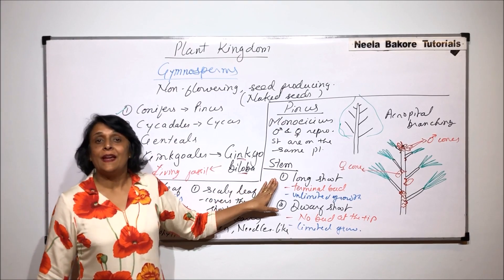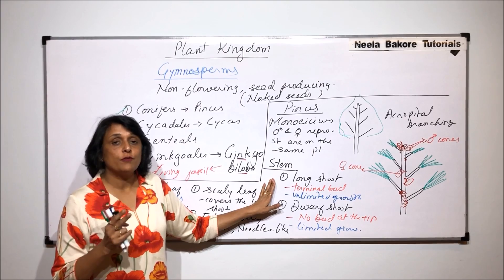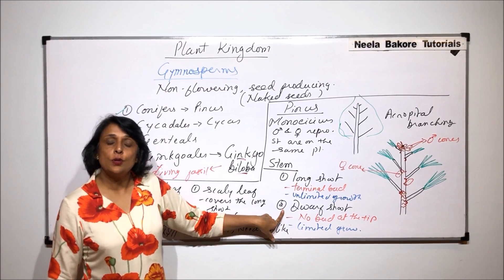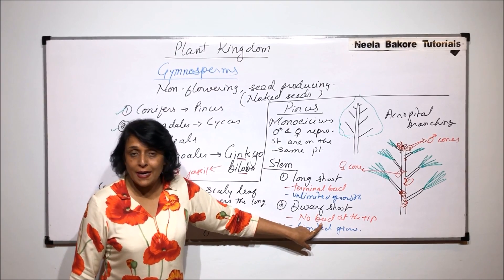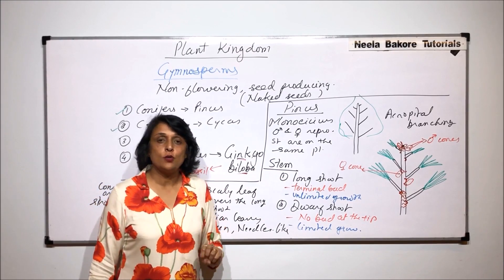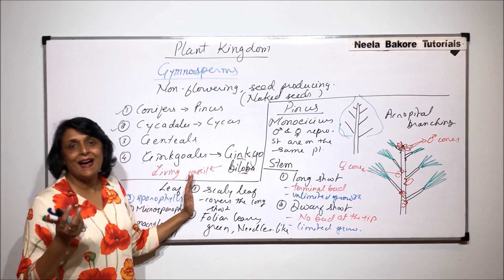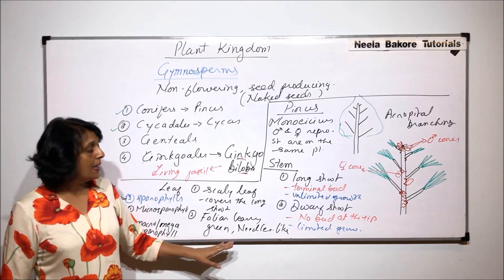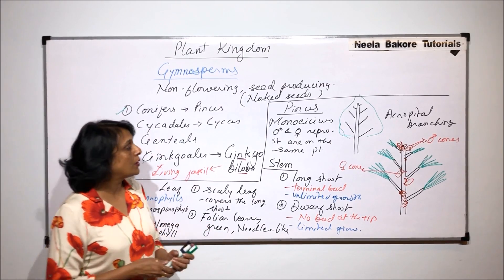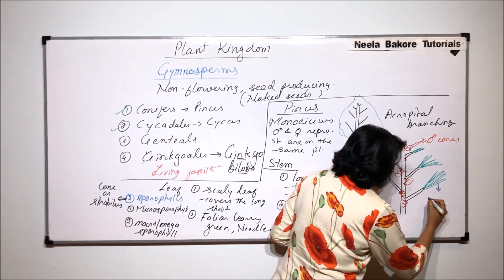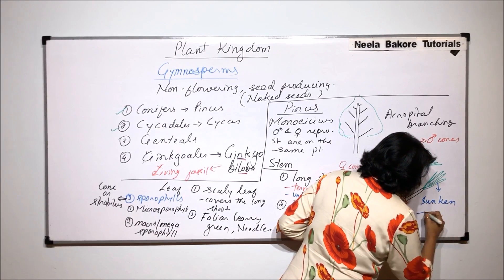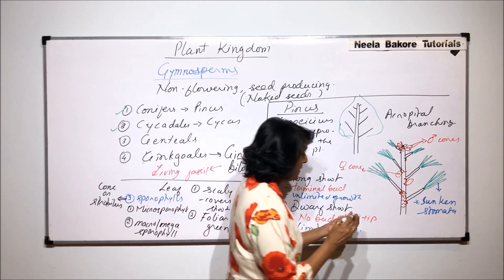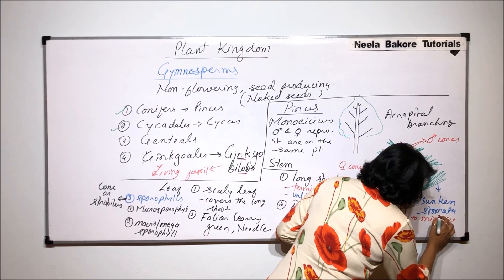To summarize: the stem has two types of shoots. The long shoot has unlimited growth due to the presence of a terminal bud. The dwarf shoot has limited growth as there is no bud at the tip. For the leaves, the brown dry scaly leaves function in protection, and the foliar or needle leaves are green and perform photosynthesis. These green needle-like leaves have sunken stomata, which is an adaptation to minimize water loss — important because Pinus grows in extremely cold conditions where water is available only as ice or snow, so liquid water is scarce.